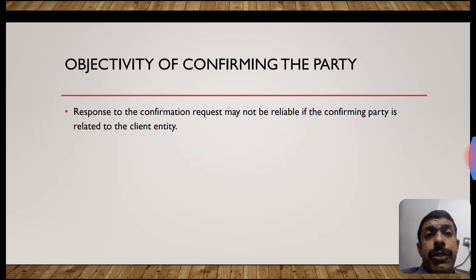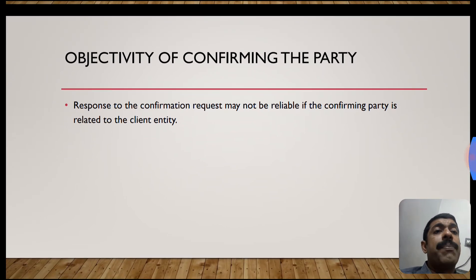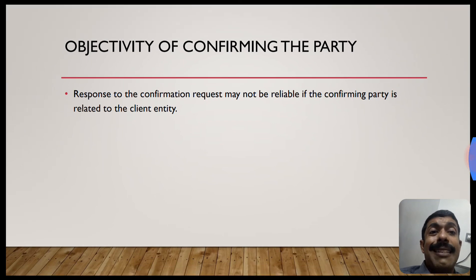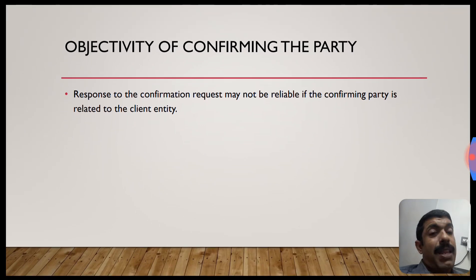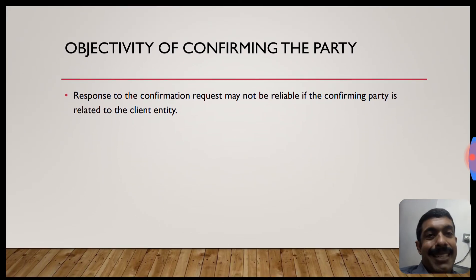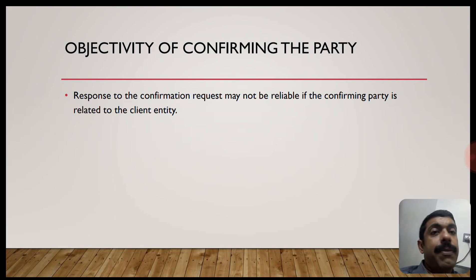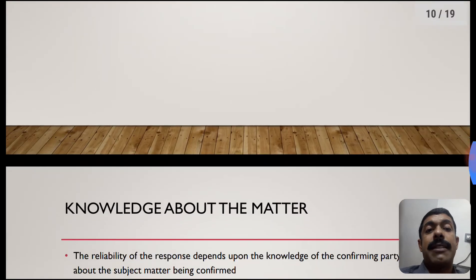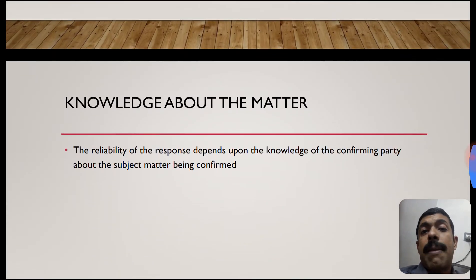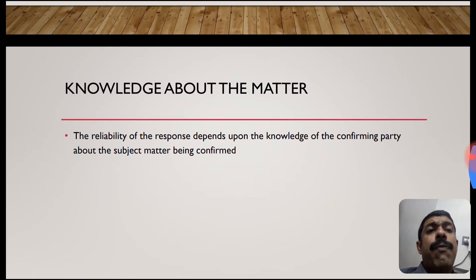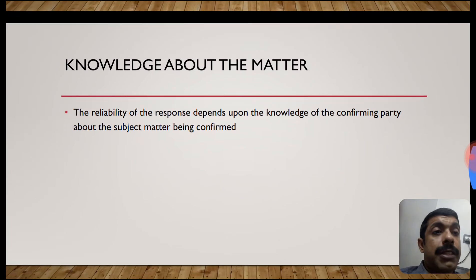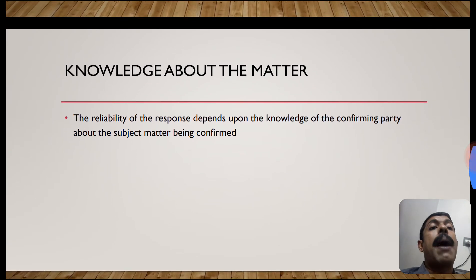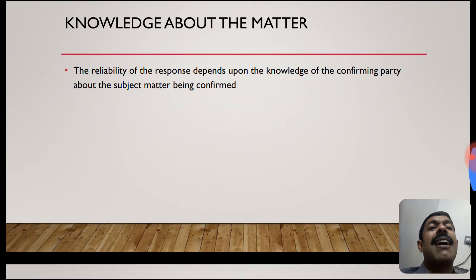Objectivity of the confirming party: a response to the confirmation request may not be reliable if the confirming party is related to the client entity. If there is a related party transaction, the objectivity may be affected. The confirmation should be taken from people who are not connected with the entity in any manner. Knowledge about the matter: the reliability of the response depends upon the knowledge of the confirming party about the subject matter being confirmed.